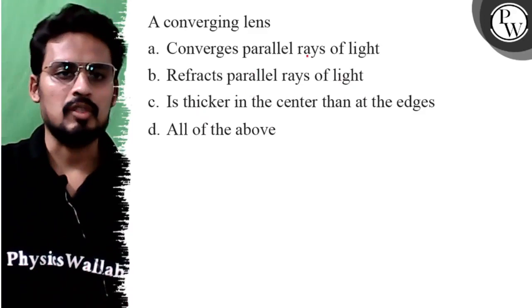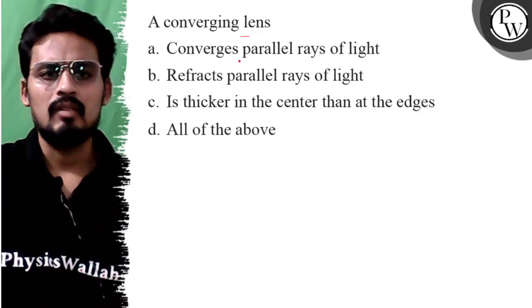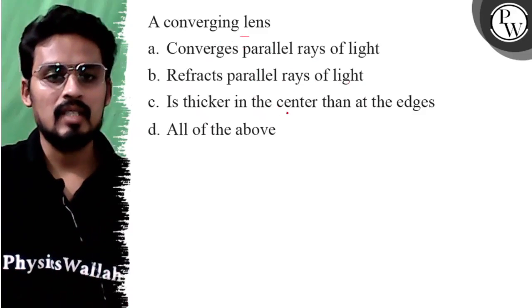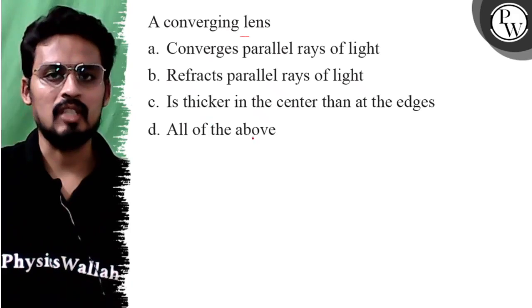Hello, let's see this question. A converging lens: converges parallel rays of light, refracts parallel rays of light, is thicker in the center than at the edges, all of the above.